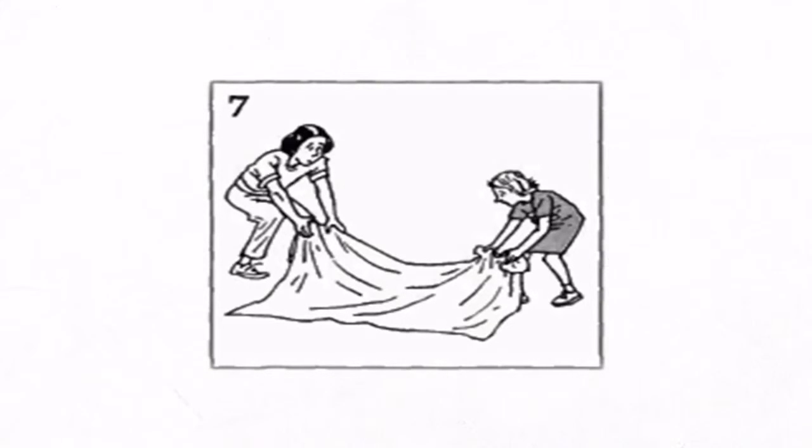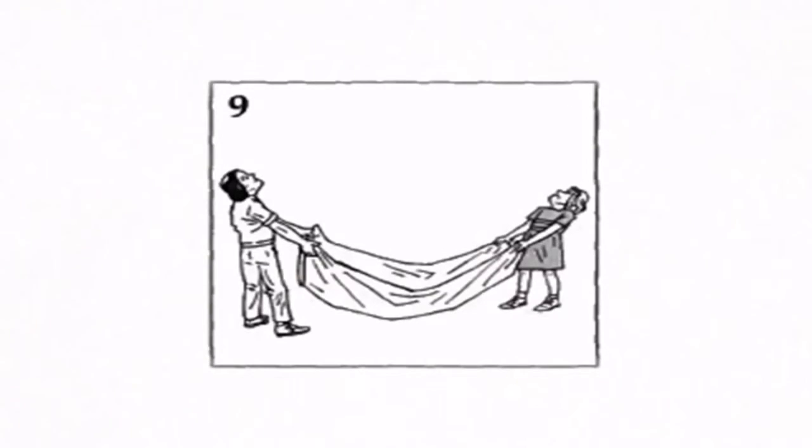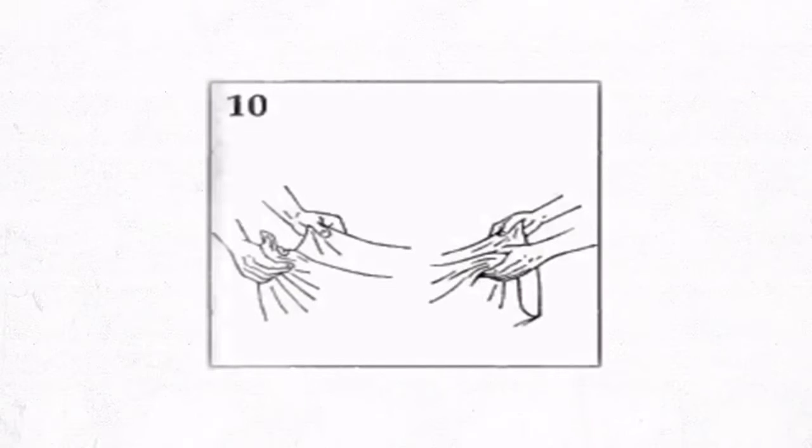Stephanie and Samantha pick up the blanket and run to the building. They hold the blanket under the window. Stephanie holds one side of the blanket and Samantha holds the other side.